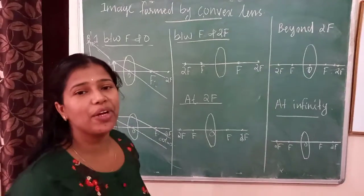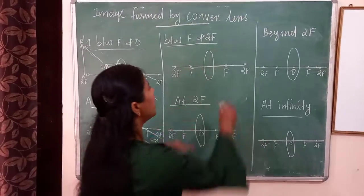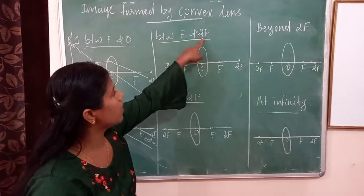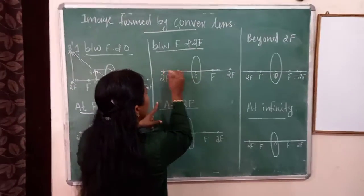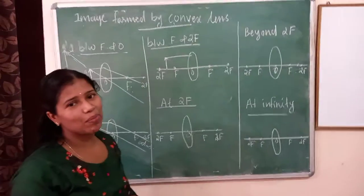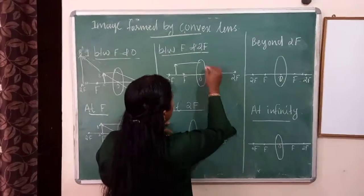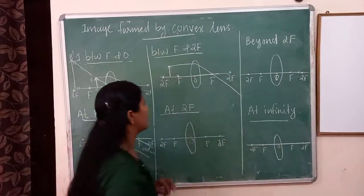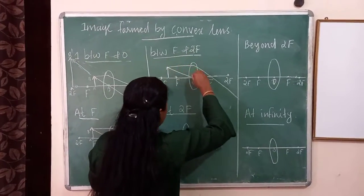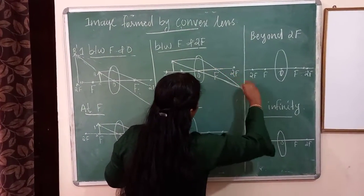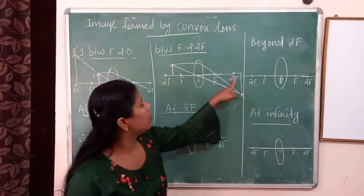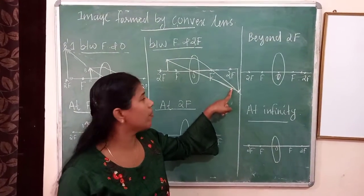Third case: object is placed between F and 2F. We draw the lens with optical center, F, and 2F on both sides. Object AB is between F and 2F. A ray parallel to the principal axis passes through the focus after refraction. A ray through the optical center goes straight. The image is formed beyond 2F on the other side.